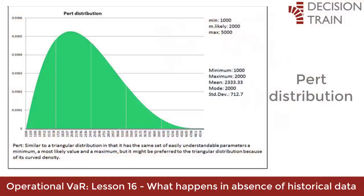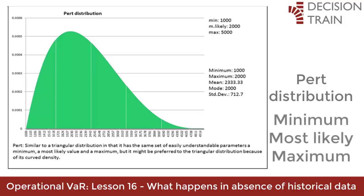We can use, for example, to rate the severity of an individual event, a PERT distribution. This is a distribution of the beta general family of distributions that admits three parameters: a minimum value, a most probable value or mode, and a maximum value.